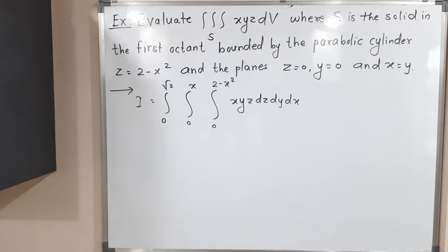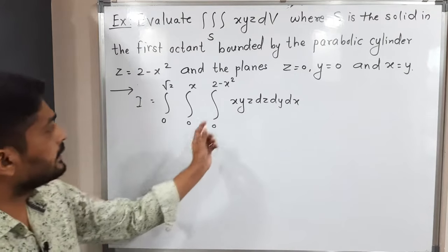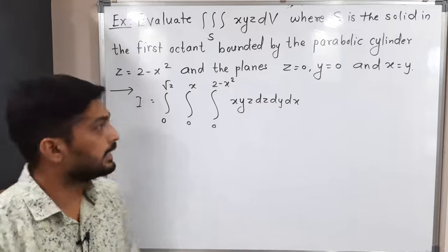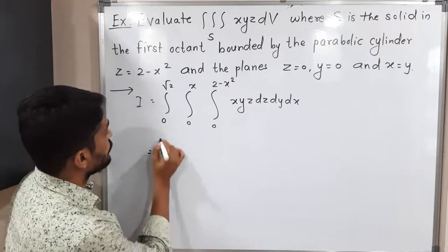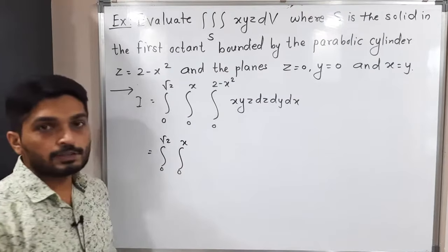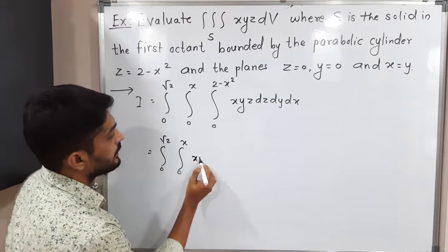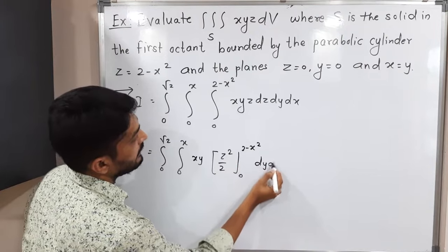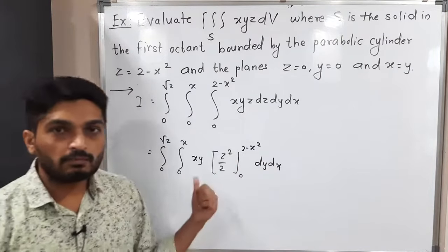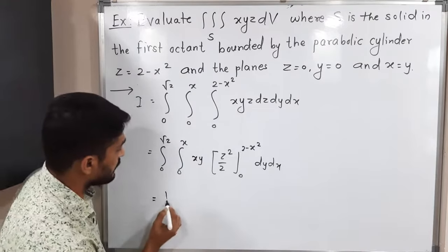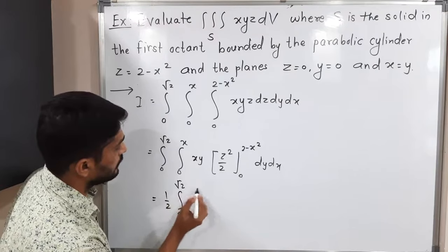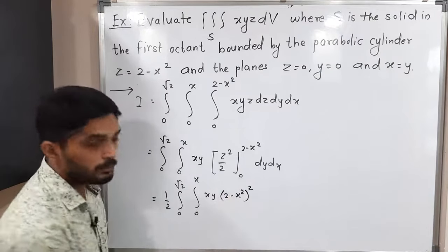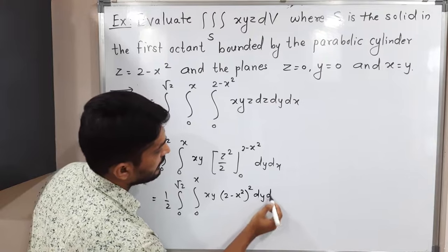Let us solve this triple integration. First we integrate with respect to Z, then Y, then X. Integrating with respect to Z from 0 to (2 − x²), X and Y are constants. Integration of Z is Z²/2, with limit 0 to (2 − x²). 1/2 is a constant — we take it outside: (1/2) ∫₀^√2 ∫₀^x XY · (2 − x²)² dy dx, since putting the lower limit 0 gives 0.